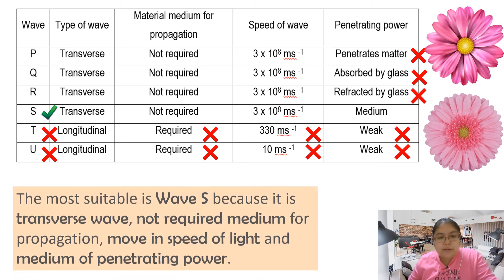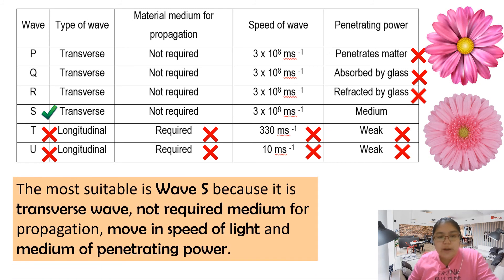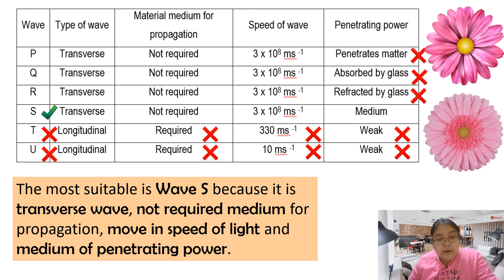So the last part — the most suitable wave is S, because it is a transverse wave, not required medium for propagation, moves at the speed of light, and has a medium level of penetrating power. This is the answer for tutorial 5.1. Hopefully you understand about it. Thank you for watching.